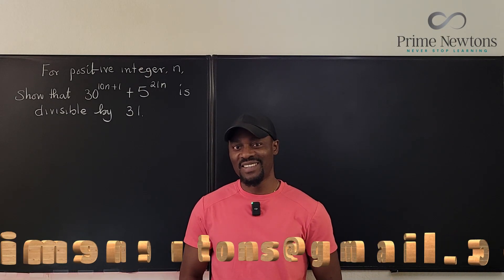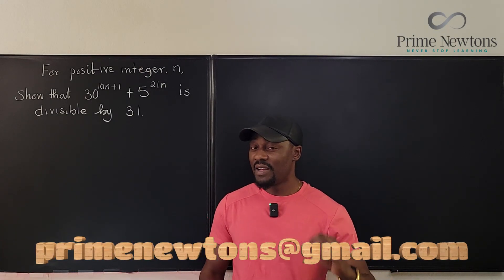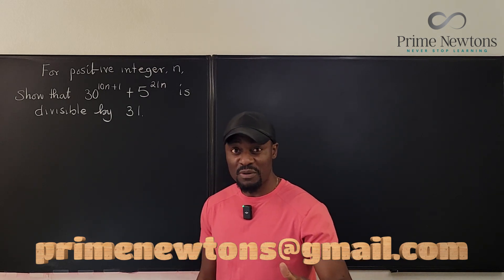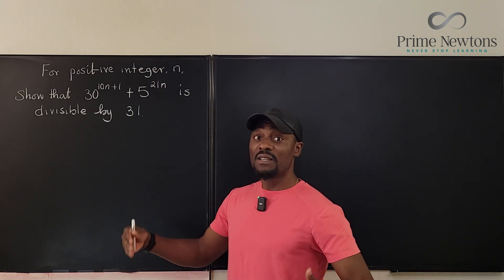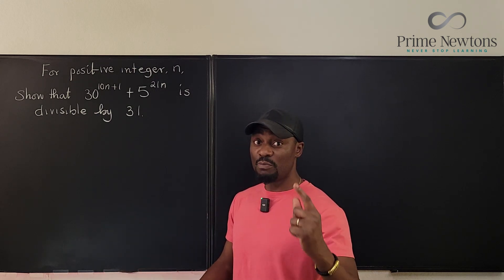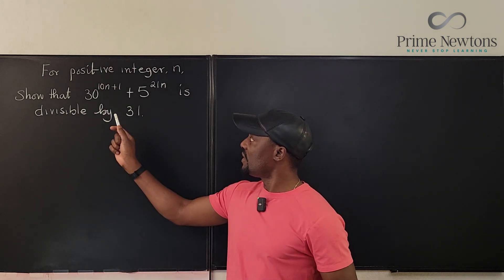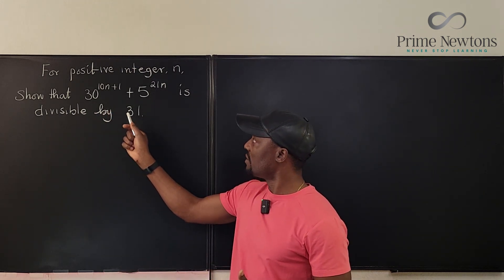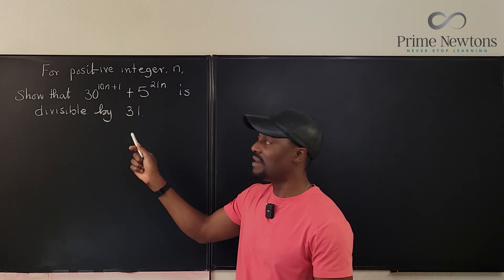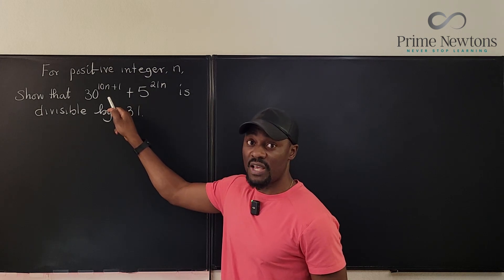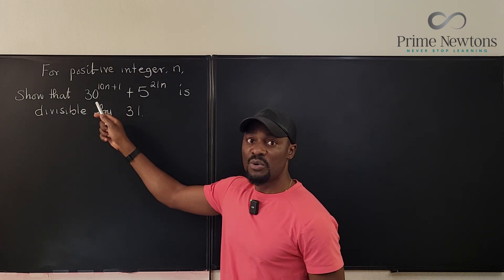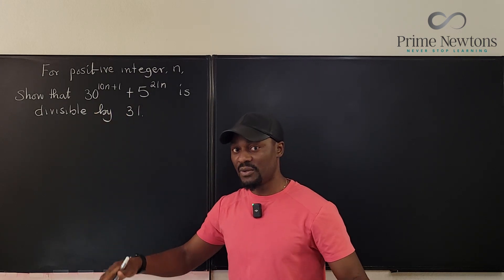Welcome to another video. We have a number theory problem here, and it has to do with divisibility. Say n is a positive integer, we need to prove that 30^(10n+1) + 5^(21n) is divisible by 31. So no matter what the positive integer is, if you make up this number, you can easily divide it by 31.